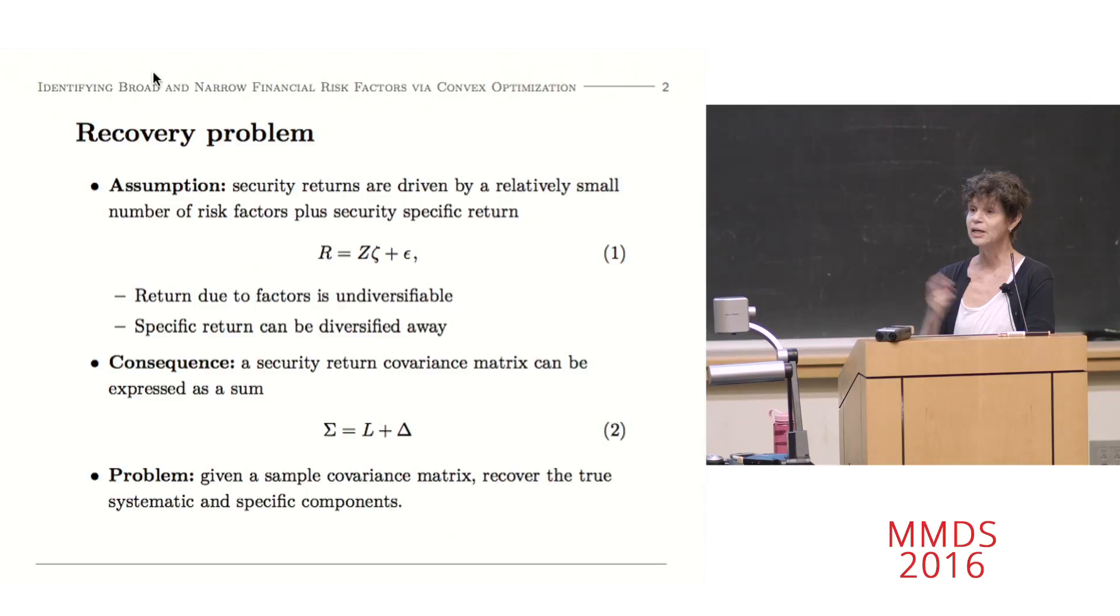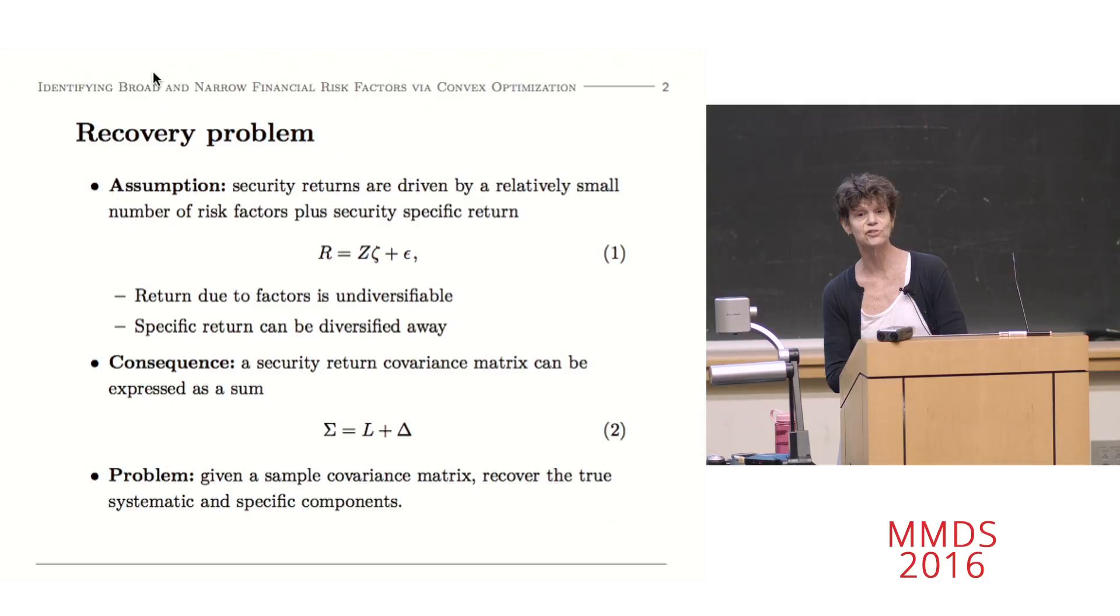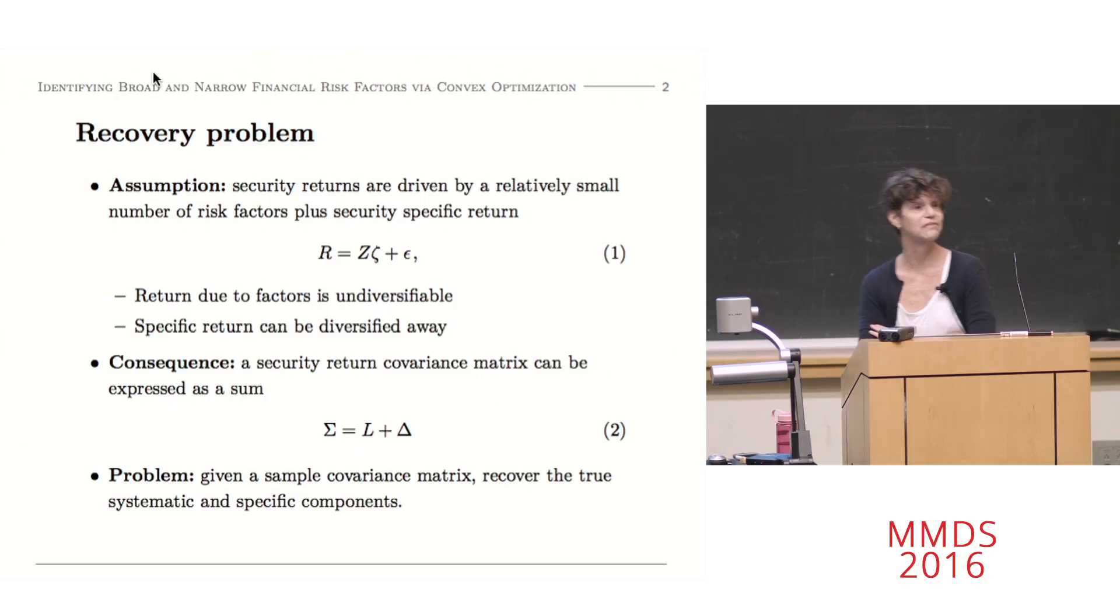Now, what's a factor? For me, in this talk, factors can be broad factors, like the market, as we heard, or Fama-French factors, and then industries, or maybe something else. But for me, in this talk, and probably for Alex in the next talk as well, a factor is going to be anything that is driving correlation. And what's left over from the factors, these Epsilons, are going to be truly diversifiable components of return.